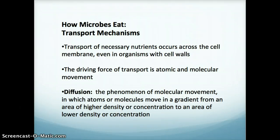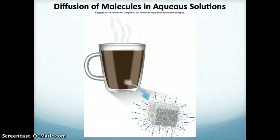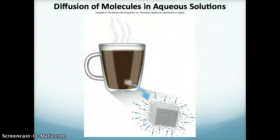The most basic form is what is called diffusion. This is where atoms or molecules are concentrated on one side of a barrier and move across to a less concentrated area. A nice example: if you put a sugar cube at the bottom of a cup of coffee or tea, because the sugar cube is more concentrated with sugar molecules than the rest of the liquid, those molecules will break up, move about, and eventually disperse evenly throughout the liquid. That's the basic idea of diffusion in an aqueous solution.